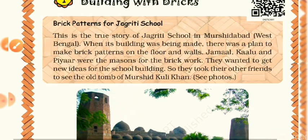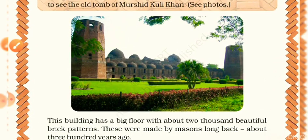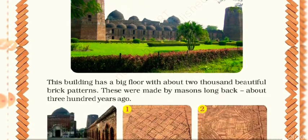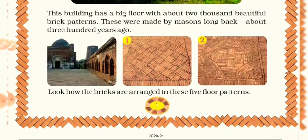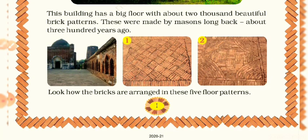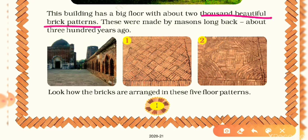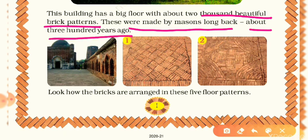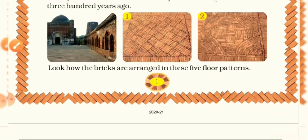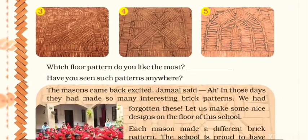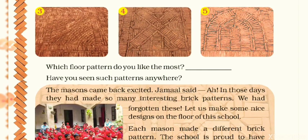Here are some photos of the building of the tomb of Murshid Kuli Khan. This building has a big floor with about 2,000 beautiful brick patterns, made by masons about 300 years ago. Here are some pictures — picture 1 and 2 show some beautiful patterns, and on the next page are picture numbers 3, 4, and 5 with such beautiful floor patterns.